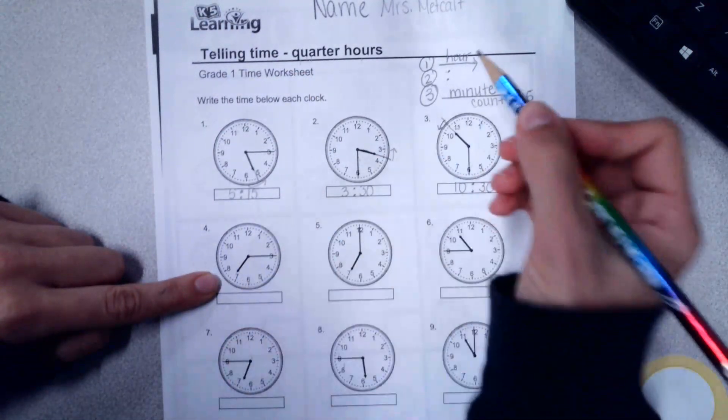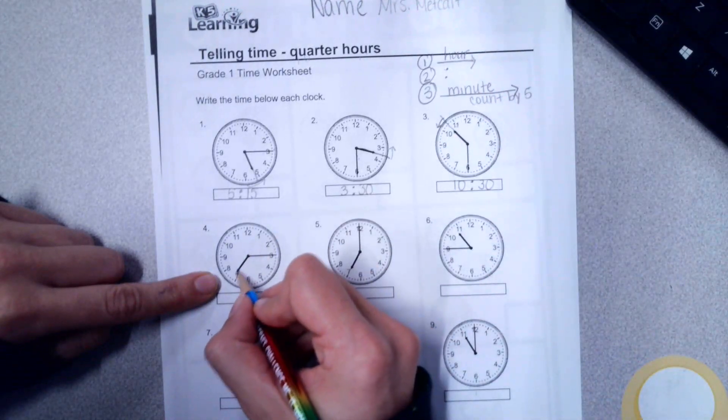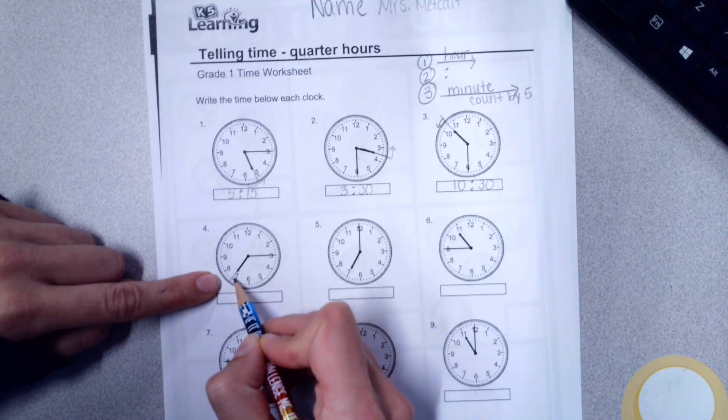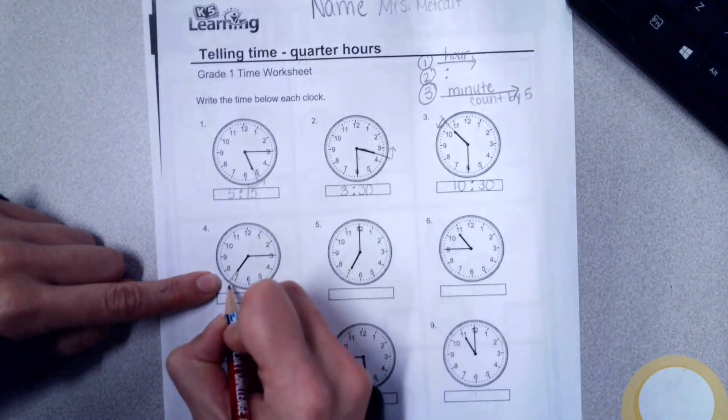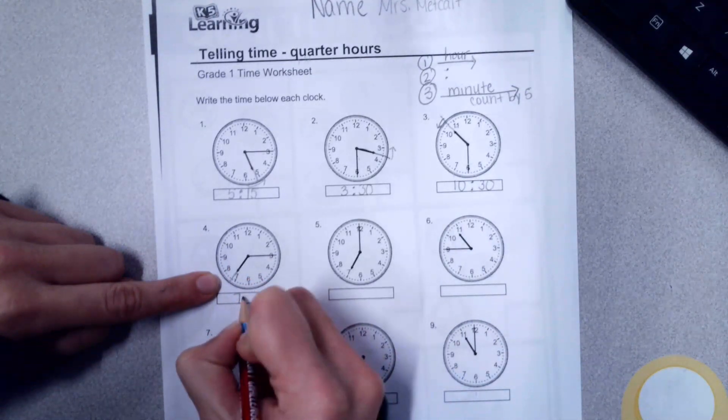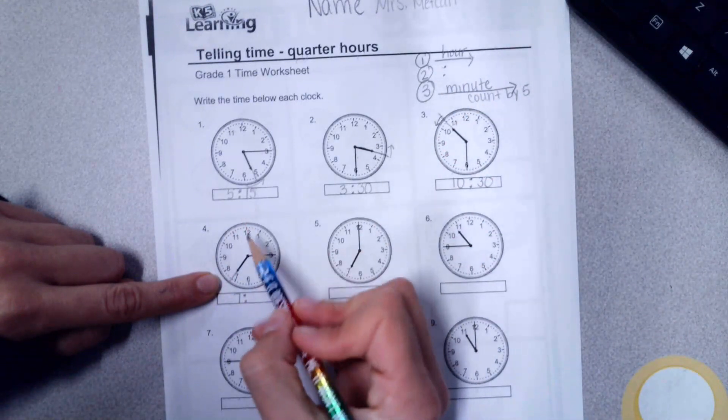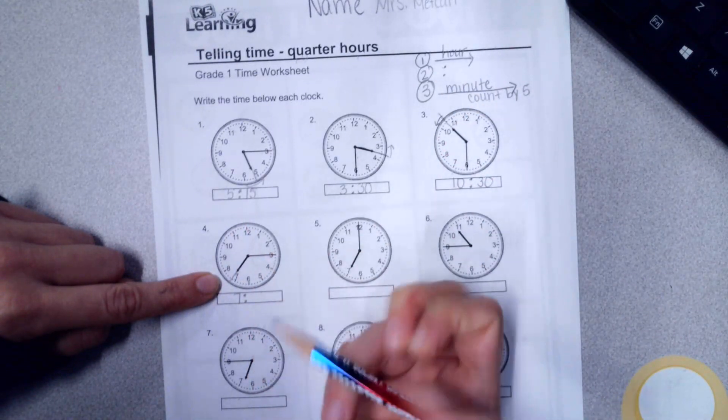Number four, this one's pretty close for the hour hand, the short hand. That's almost pointed at the seven. Still, if it's not pointed at a number, we write the smaller number, seven or eight. Seven is smaller. Write our colon. And now step three, count by fives. Five, ten, fifteen.